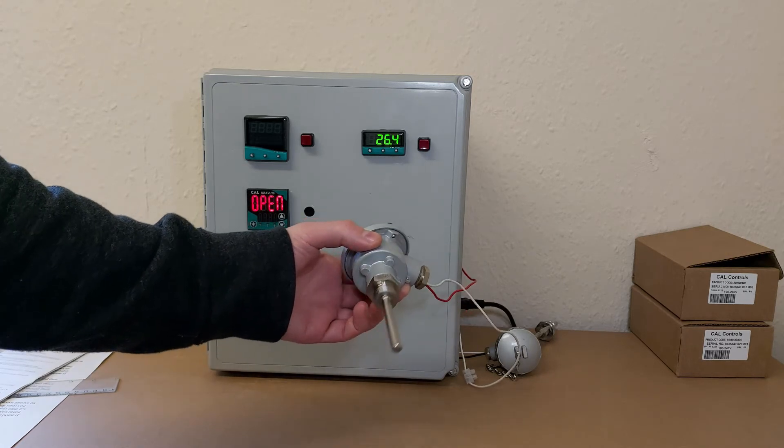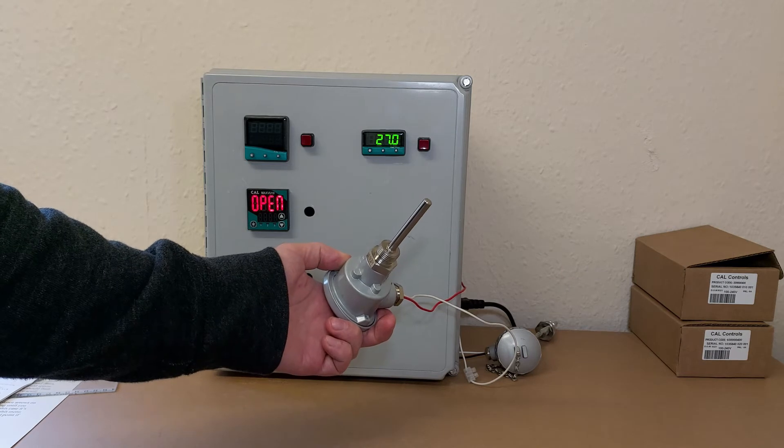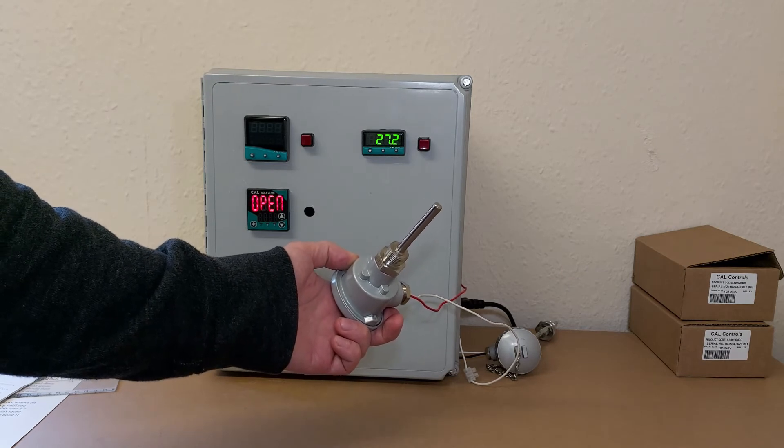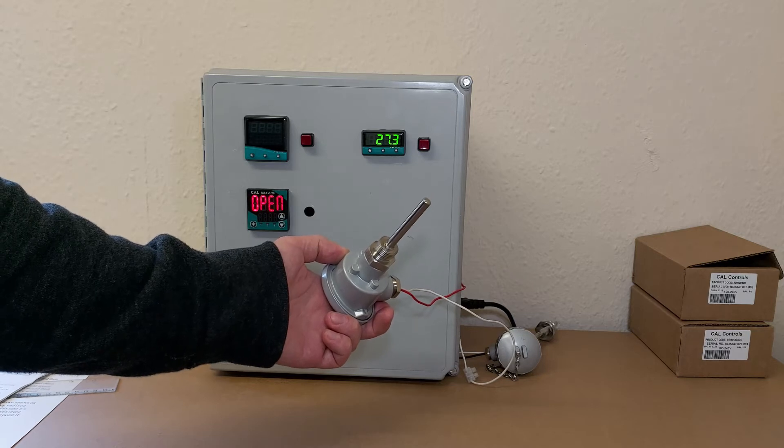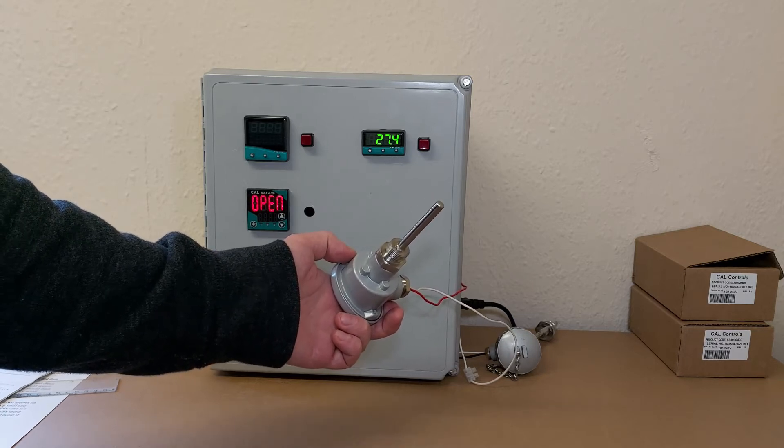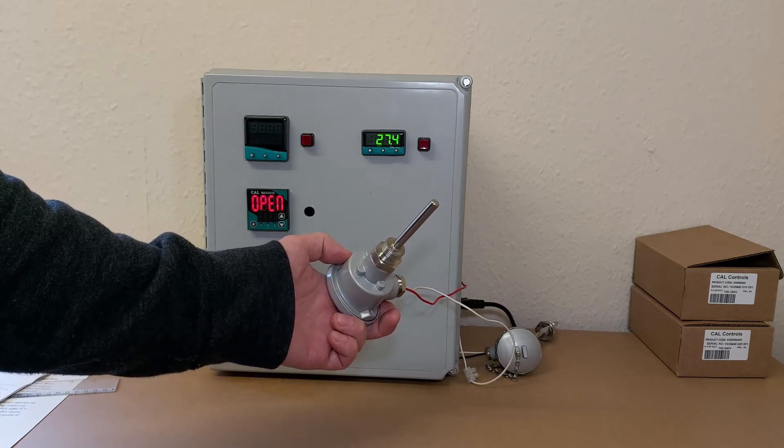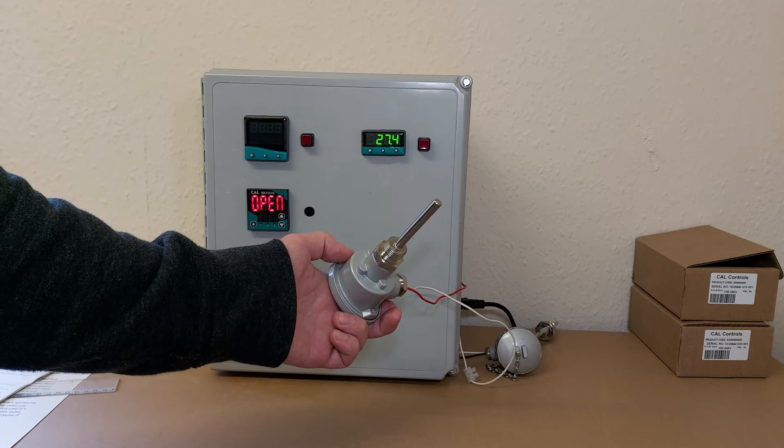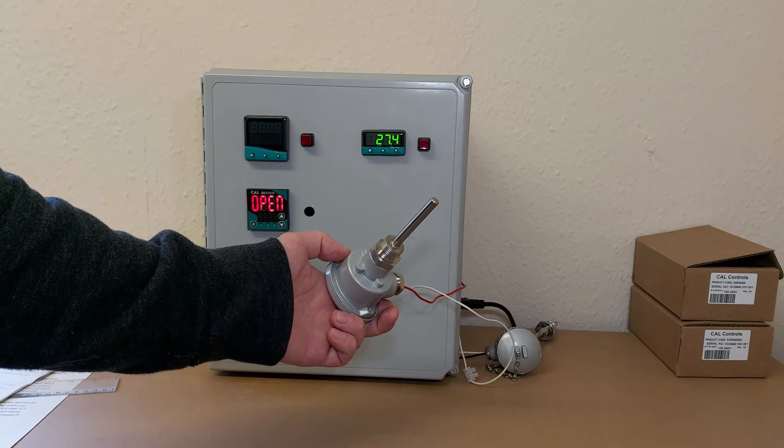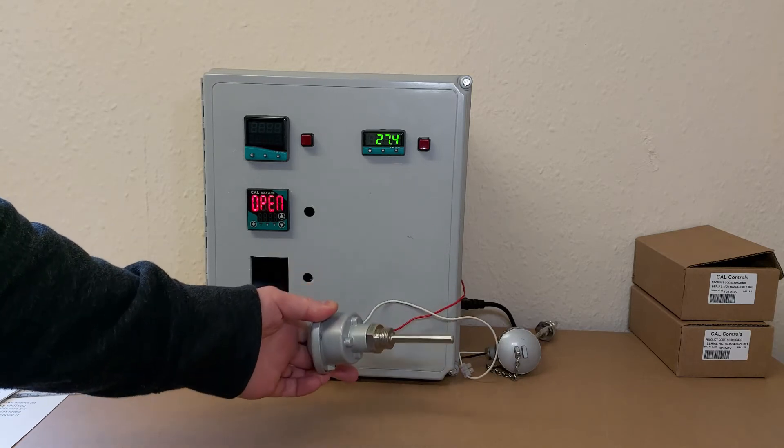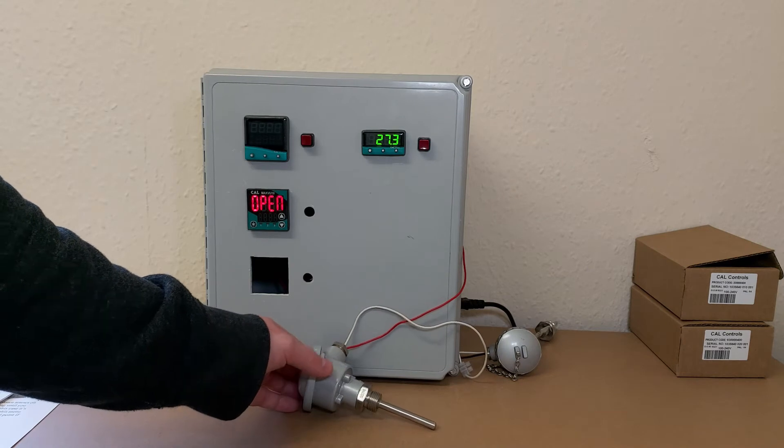It has a platinum element and a resistance of 100 ohms at 0 degrees C. Other types of RTD are available, for example PT1000, which has a resistance of 1000 ohms at 0 degrees C. RTDs using copper and nickel wire are also available. CAL controllers can only be used with the PT100 type of RTDs.